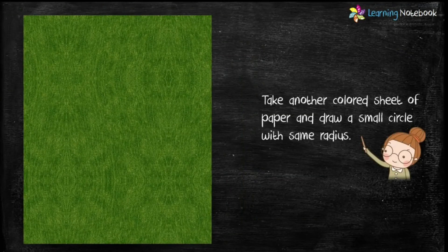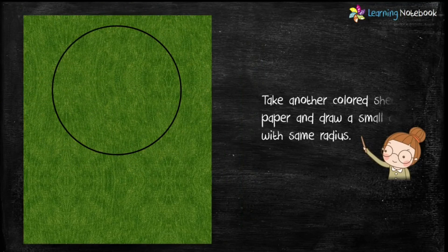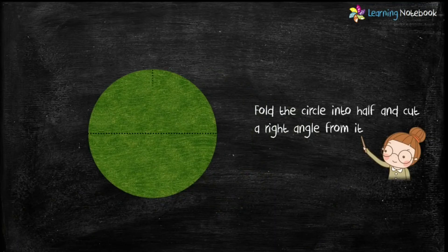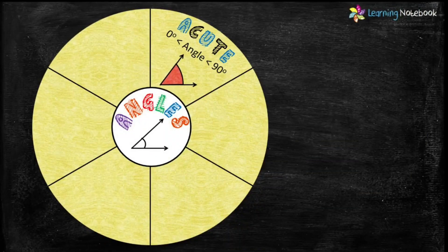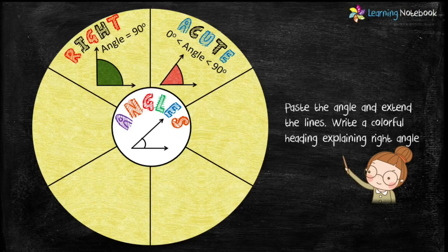Take another colorful sheet and draw a small circle keeping the same radius, then carefully cut it out with scissors. Fold this circle in half vertically as well as horizontally, then cut a right angle from it as shown. You can also draw these angles using a protractor. Paste this right angle on the math wheel, extend the lines, and write a colorful heading with its property that right angle equals 90 degrees.